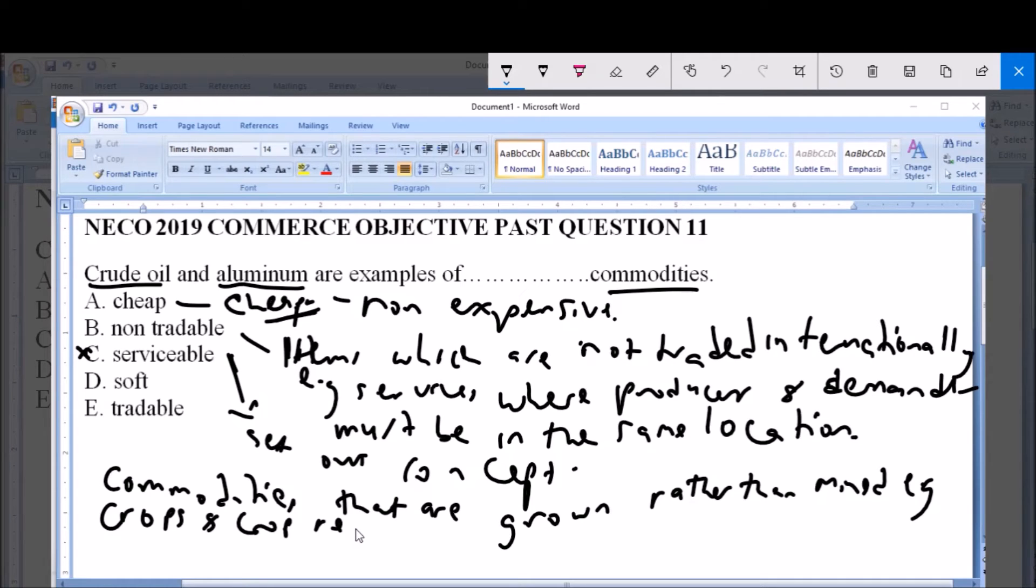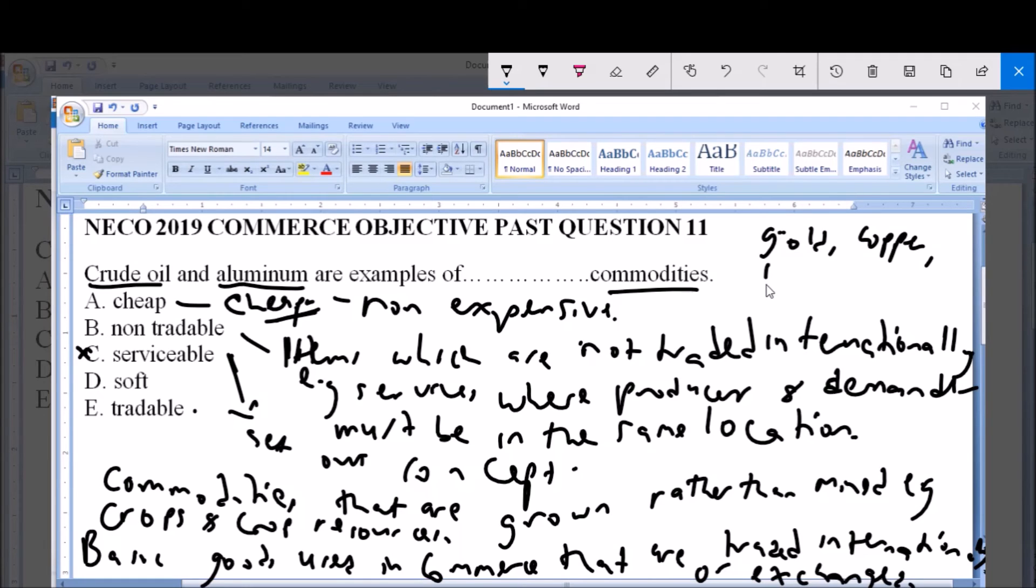Then option E, which is tradable, refers to basic goods used in commerce that are traded internationally or exchanged. Examples of tradable goods include gold, copper, fossil fuels like crude oil, currencies, etc.